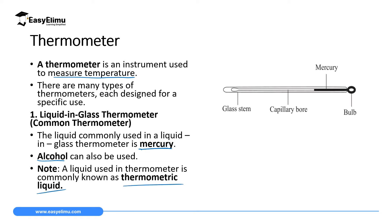If I mention thermometric liquid, just know I am talking about a liquid which is used inside a thermometer. In most cases we use mercury because mercury is opaque — you can see it easily. And sometimes we use alcohol.